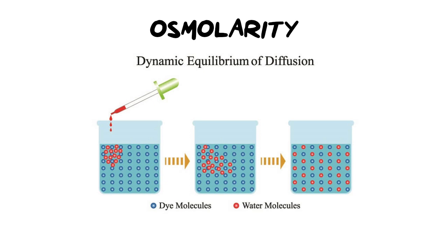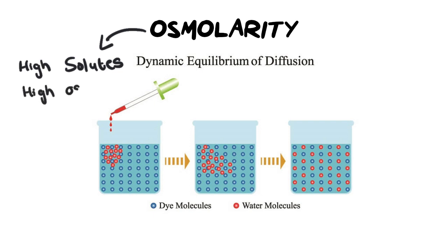To fully understand osmoregulation, or the regulation of water in the loop of Henle, we need some diffusion or osmosis knowledge and we need to unpack the word osmolarity, because I'm going to use it quite regularly. Essentially, when we talk about osmolarity we are talking about the solutes — in this case often salts — and how many there are dissolved in the liquid. If it has a high solute content, that means it has high osmolarity.